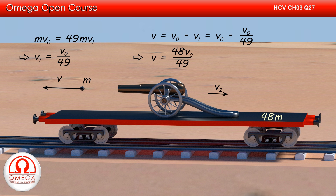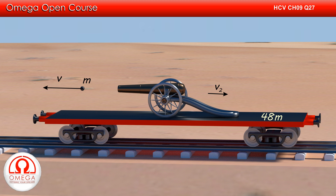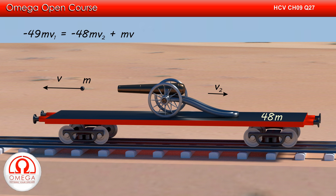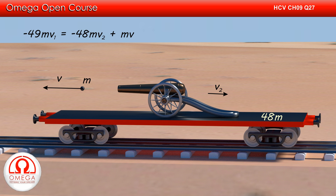Since the shell of mass m has been removed from the system, the mass of the remaining system is 48m. Now, let us apply conservation of momentum to the system before and after firing of the second shell. Before the second shell was fired, the system had mass 49m and was moving in the backward direction with speed V1, so its momentum was -49mV1. After firing, the mass of the gun-car system is 48m moving with speed V2 in the backward direction, giving momentum -48mV2. The shell is moving forward with velocity V, so its momentum is mV. Thus: -49mV1 = -48mV2 + mV.